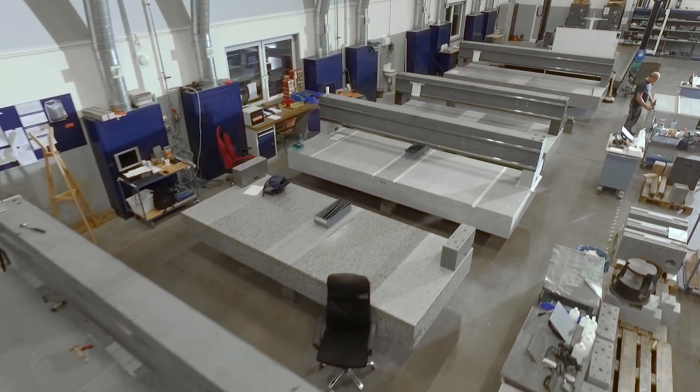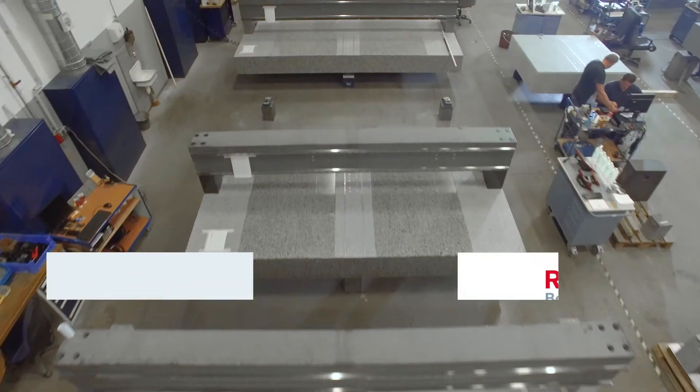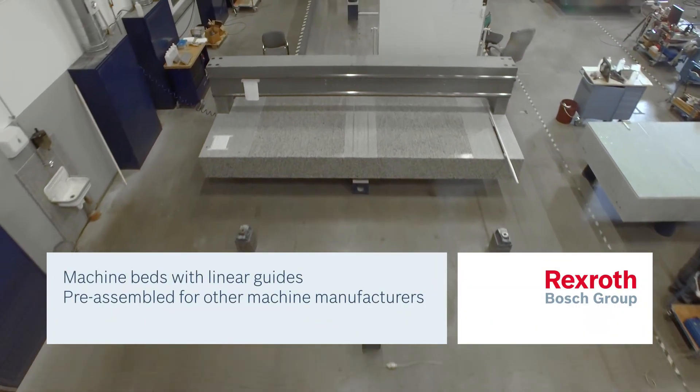In our fully air-conditioned precision measurement room, we can achieve an accuracy of 1 to 2 micrometers by relapping before we install the linear guides.